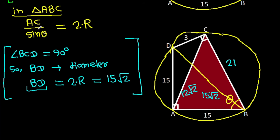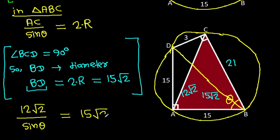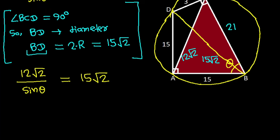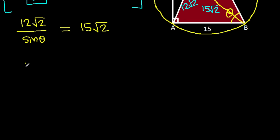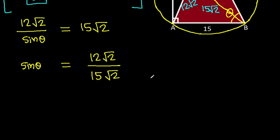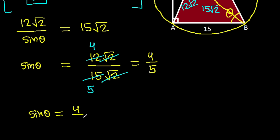AC = 12√2, and AC / sin(theta) = 2R = 15√2. So sin(theta) = 12√2 / 15√2. The √2 cancels, giving sin(theta) = 12/15 = 4/5.